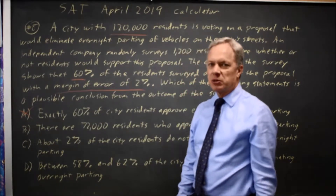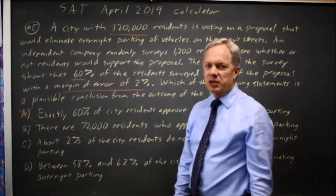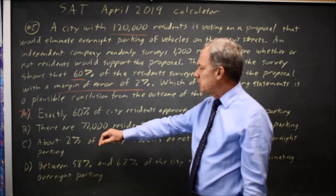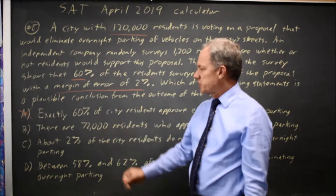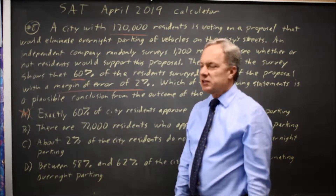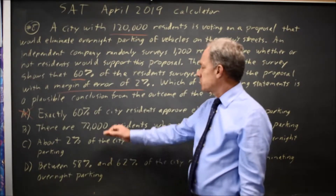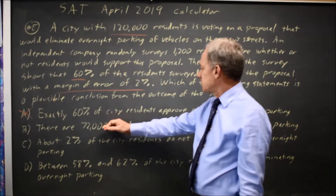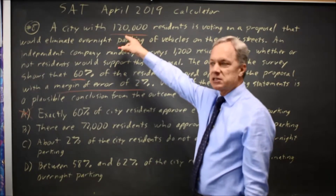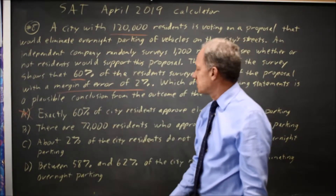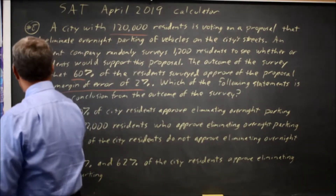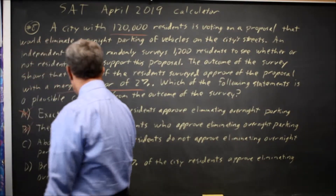You expect some random error in a survey, and Choice B is equivalent to Choice A. If exactly 60% of residents approve and there are 120,000 residents, that's 72,000 residents who approve. So Choice B would also be wrong.